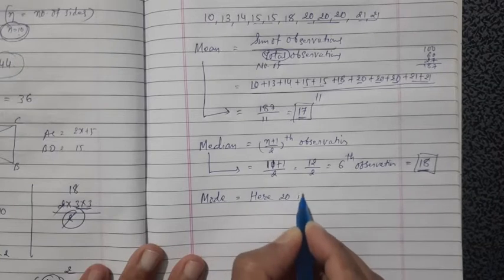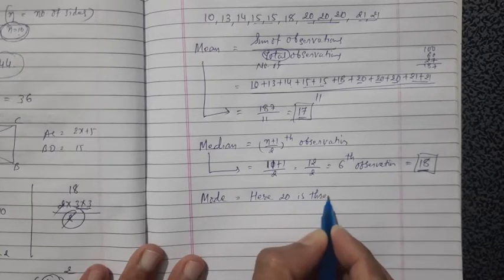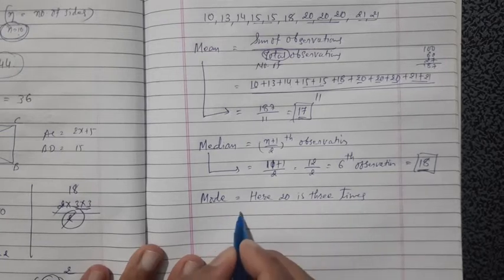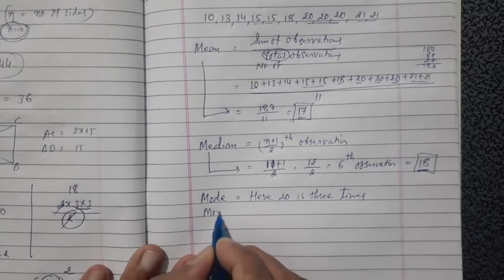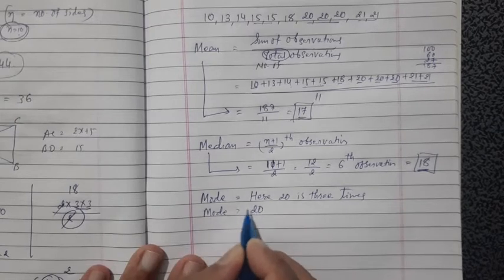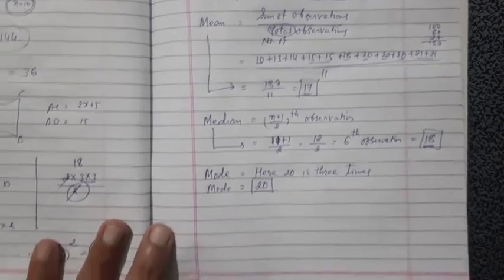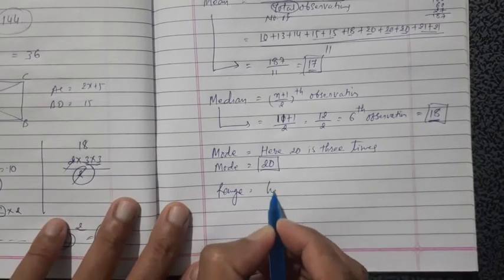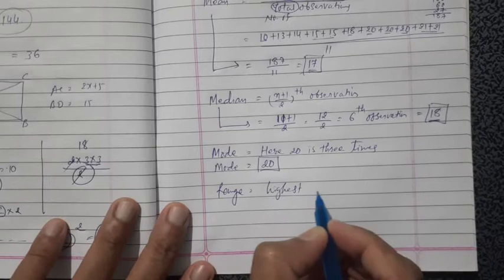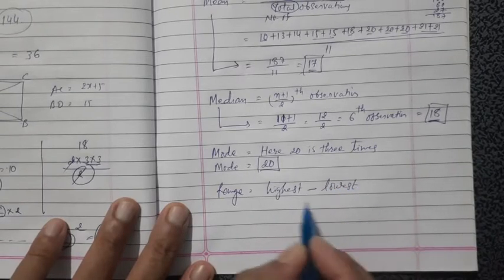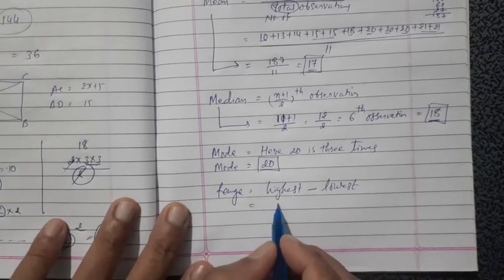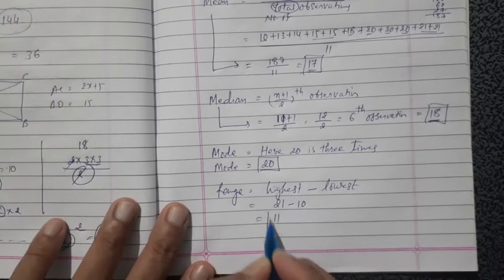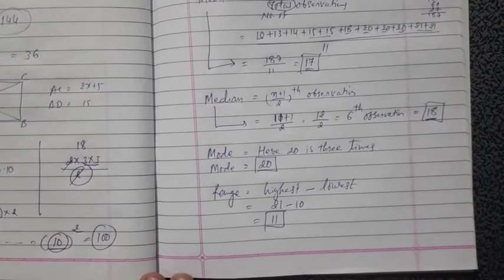So mode equals 20, since 20 appears the maximum number of times. And range equals highest observation minus lowest observation, that is 21 minus 10 equals 11. So range is 11.